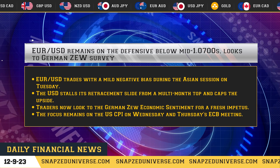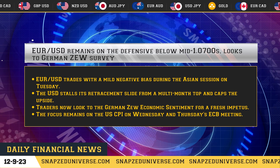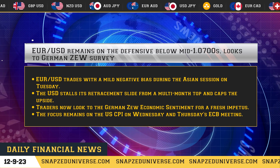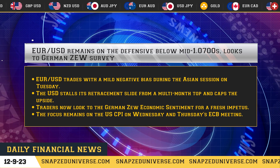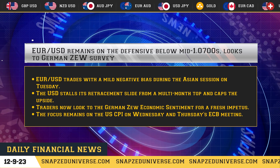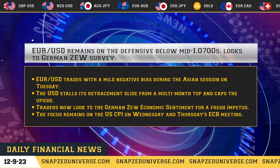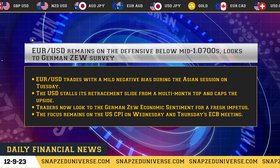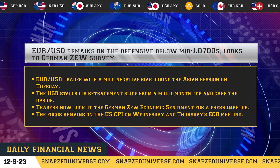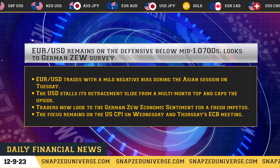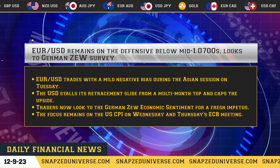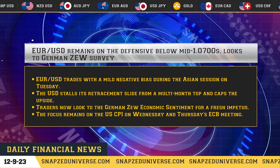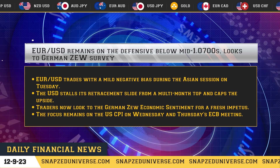EUR/USD remains on the defensive below mid-1.0700s, with eyes on the German ZEW survey. EUR/USD trades with a mild negative bias during the Asian session on Tuesday. The USD stalls its retracement slide from a multi-month top and caps the upside. Traders now look to the German ZEW economic sentiment for fresh impetus, while the focus remains on the US CPI on Wednesday and the ECB meeting on Thursday.